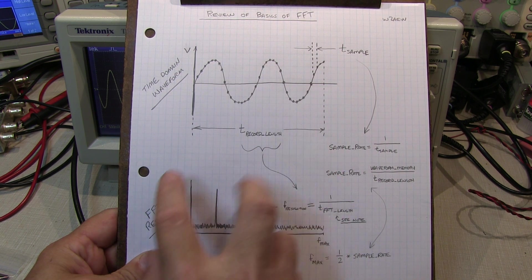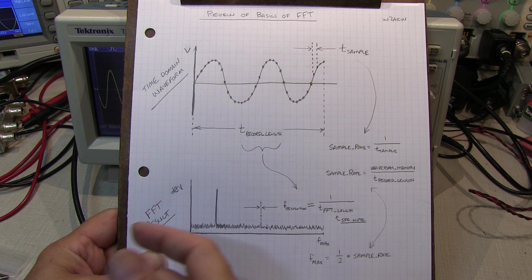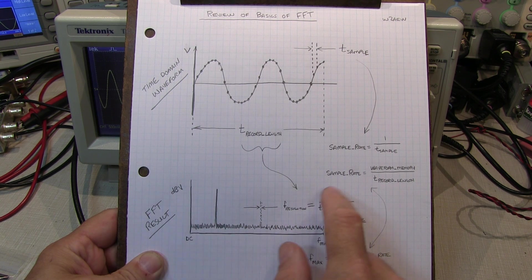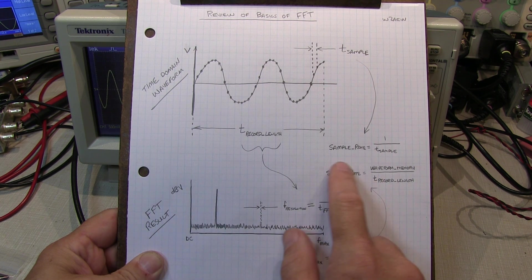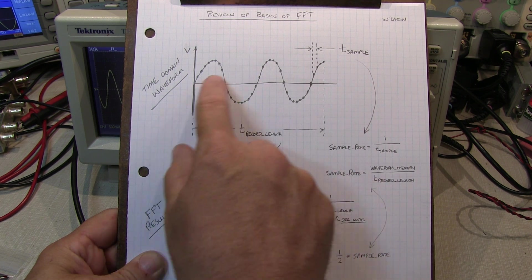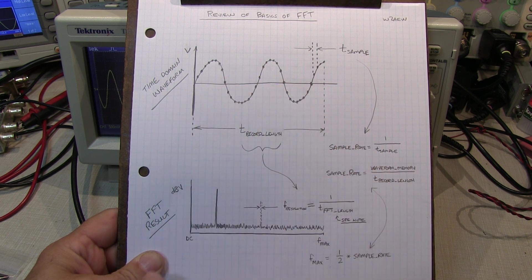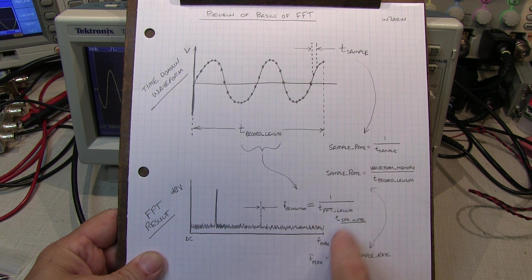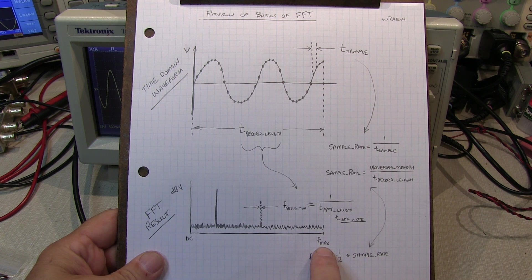In many cases when you're dealing with slower waveforms the actual sample rate of the waveform is going to be much less than the max sample rate of the scope, so you have to be careful about that. So that's what determines the maximum frequency of the FFT.